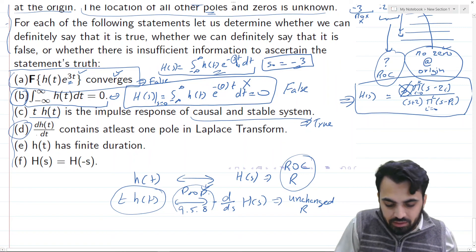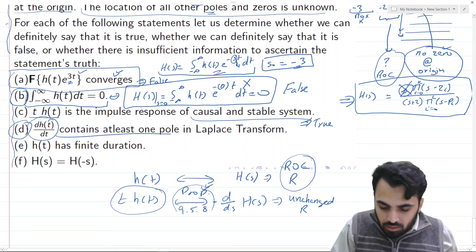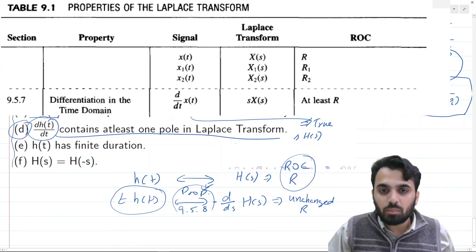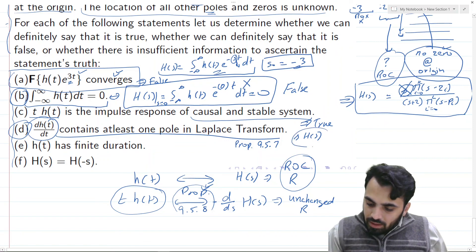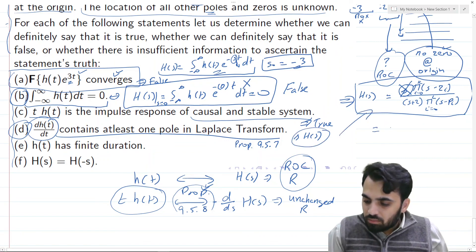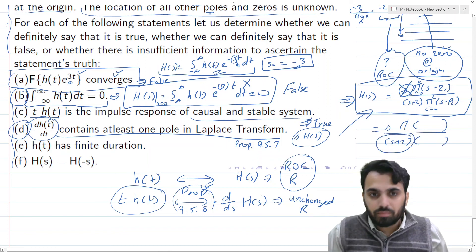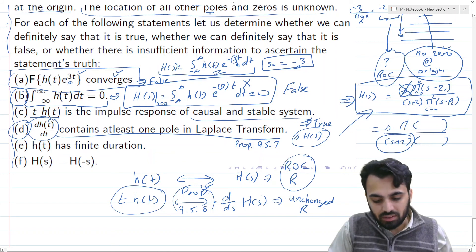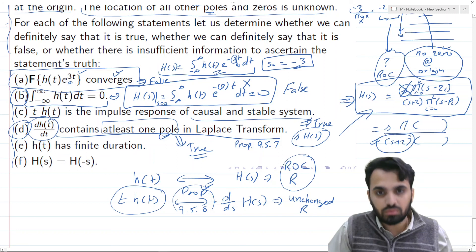Part D states that dh(t)/dt contains at least one pole in its Laplace transform. Differentiation in the time domain corresponds to multiplication by s in the s-domain (Property 9.5.7). So the transform becomes s·H(s), which retains the factor (s+2) in the denominator, preserving the pole at s = -2. Therefore the derivative still has at least one pole, and this statement is TRUE.